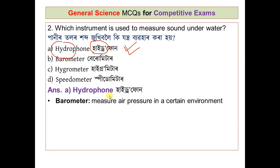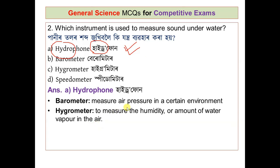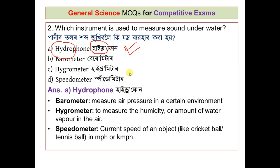A barometer measures air pressure in a certain environment. A hygrometer measures humidity and the amount of water vapor in the air. A speedometer measures the current speed of an object — for example, how fast a ball is moving — in kilometers or miles per hour.